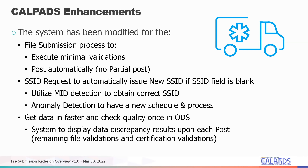Knowing that we are issuing new SSIDs and that students probably already have one — especially if they're transfers — we will utilize MID detection to identify if the student already has an ID in the system. We will report back when we find those MID anomalies. We had to change the schedule to give immediate feedback when a student now has a new SSID but MID detection found they already had one. That process will run in real time.